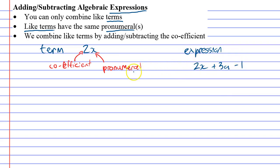Next we'll talk about like terms. A good example of like terms would be 2x and 3x. They are called like terms because they have the same pronumeral. The coefficient is different, but that's not important. What's important is they have the same pronumeral.